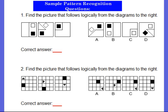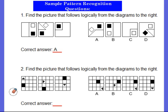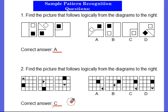The pattern recognition questions are like this. For number one, find the picture that follows logically from the diagrams to the left. You have three pictures and then choose A, B, C, or D to complete the sequence. If you'd like more time, go ahead and pause the video. The correct answer is A. Did you get that right? For number two, find the picture that follows logically from the diagrams. If you need more time, please pause the video. The answer is C. How'd you do?